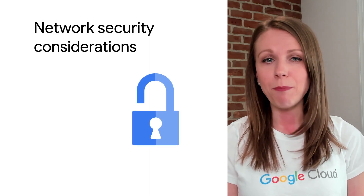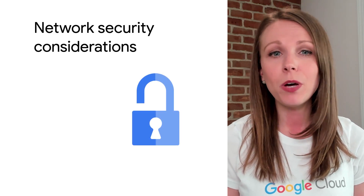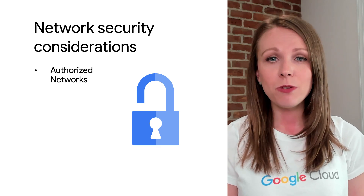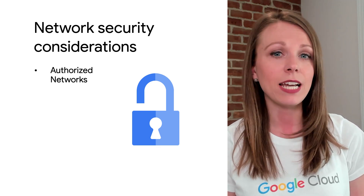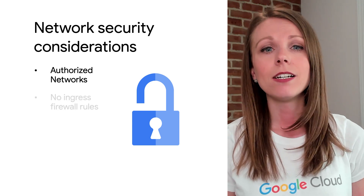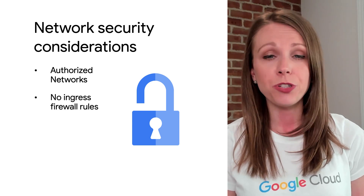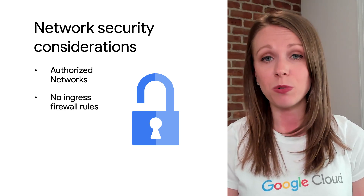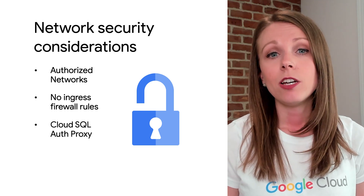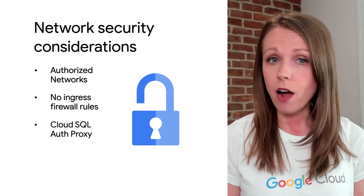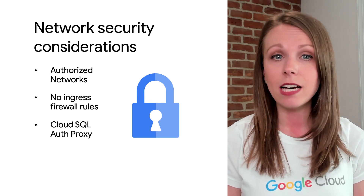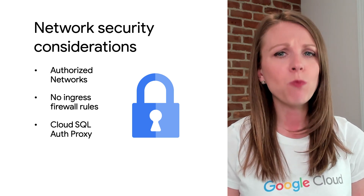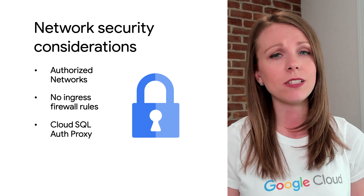Let's quickly touch on some network security-related topics. For Cloud SQL deployed with public IP, you can use authorized networks to determine a list of whitelisted IP addresses that can access your instance. You cannot use firewall rules to control ingress to a Cloud SQL instance. You can use the Cloud SQL auth proxy to encrypt all traffic to and from the database using TLS, and to control who and what can connect to your Cloud SQL instance.